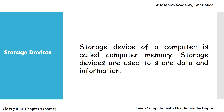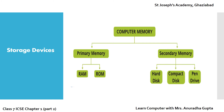Let's move to the second topic: Storage Devices. Storage devices of a computer are also called Computer Memory. Storage devices are used to store data and information. Computer Memory is classified into two categories: Primary Memory and Secondary Memory. In Primary Memory, RAM and ROM are considered.